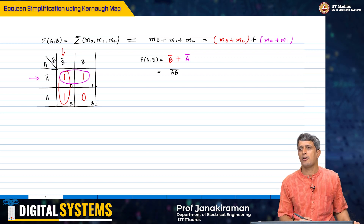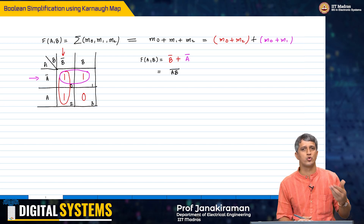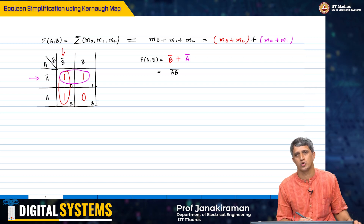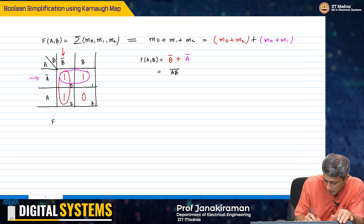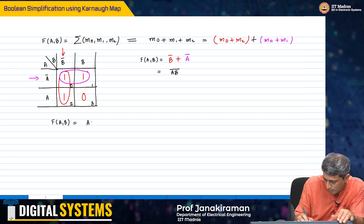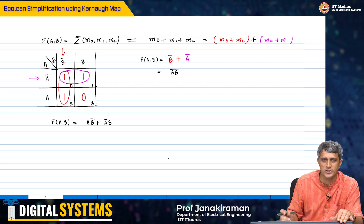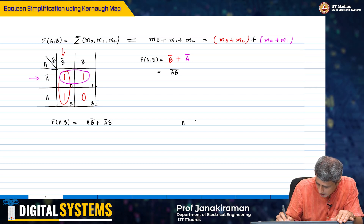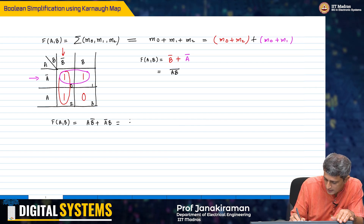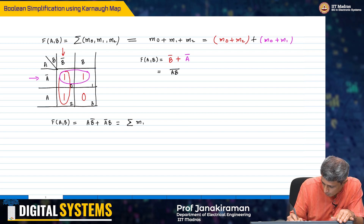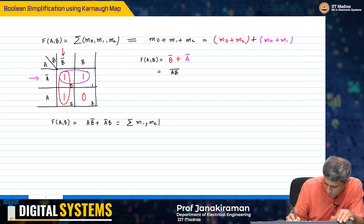I urge you to please go ahead and try the NOR2 gate and also the XOR gate. The XOR gate was defined as a·b̄ + ā·b. The real question is: is it even possible to simplify this any further? If you look at the truth table, we can write it as Σ(m1, m2).